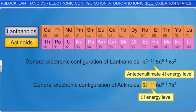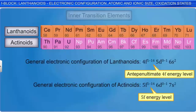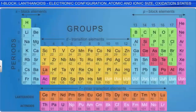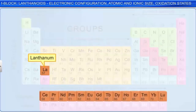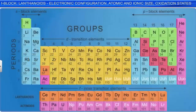These two series of elements are therefore called the inner transition elements. Since the D-block element lanthanum closely resembles the lanthanoids, it is usually included in any discussion of lanthanoids. Similar is the inclusion of the D-block element actinium in the study of actinoids.